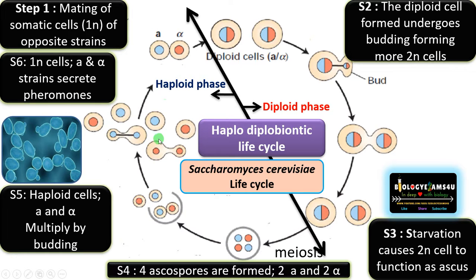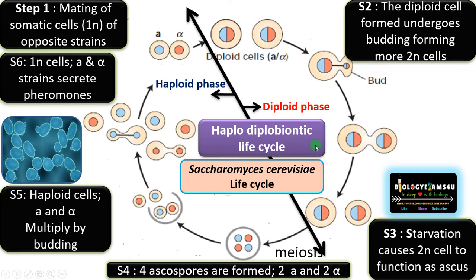The haploid cells come out and undergo budding, beginning the haploid phase. At a later stage, the A and alpha haploid yeast strains come in contact under the influence of pheromones or chemical attractants, again forming the diploid cell. Both the haploid yeast cell and diploid yeast cell are equally dominant, and the life cycle is called the haplodiplobiontic life cycle.